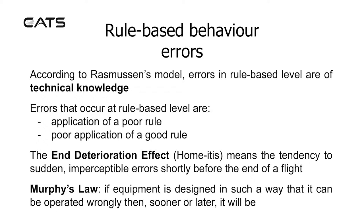Rule-based behaviour errors. According to Rasmussen's model, errors at the rule-based level are of technical knowledge. Errors that occur at the rule-based level include: application of a poor rule, poor application of a good rule, and the end deterioration effect.